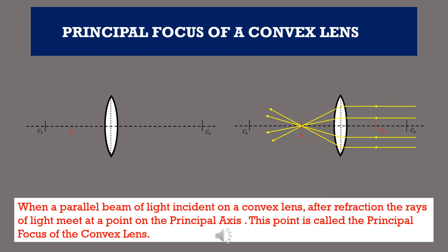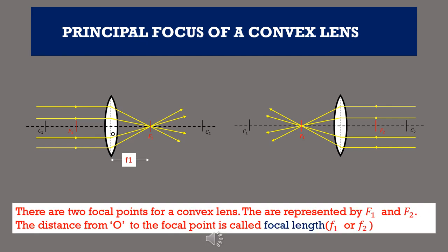Principal focus of a convex lens: when a parallel beam of light is incident on a convex lens, after refraction the rays of light meet at a point on the principal axis — this point is called the principal focus of the convex lens. There are two focal points for a convex lens, represented by F1 and F2. The distance from O, the optical center, to the focal point is called the focal length, represented by small f1 and small f2.